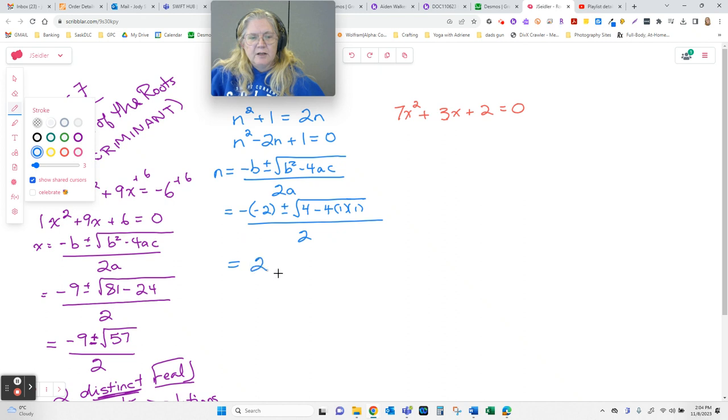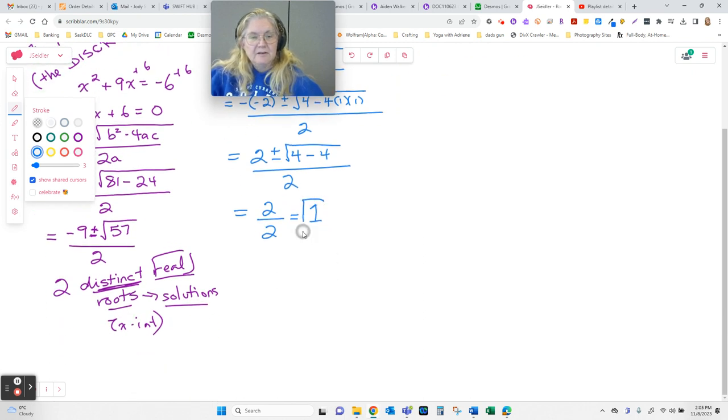The negative of a negative makes that a 2. Under here, I have 4. And 4 times 1 times 1. That's going to be important. Over 2. Because 4 minus 4 is 0. And the square root of 0 is 0. So I'm not going to write this because it doesn't change anything. Really, all we have is 2 on top and 2 on the bottom, which reduces to 1. This is the only answer to this equation. This one has one real root.